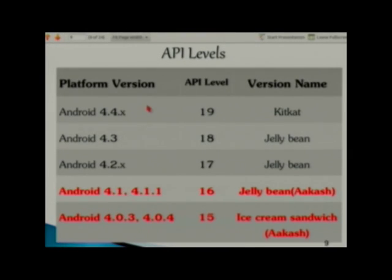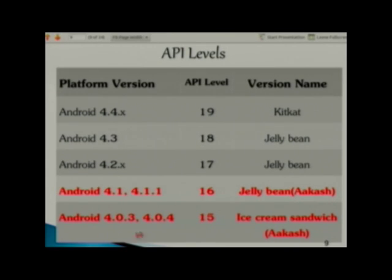This slide shows the platform version, their corresponding API levels, and the version name. The entries marked in red are what the Akash tablet uses. For example, Android 4.0.3 has API level 15 and its version name is Ice Cream Sandwich.